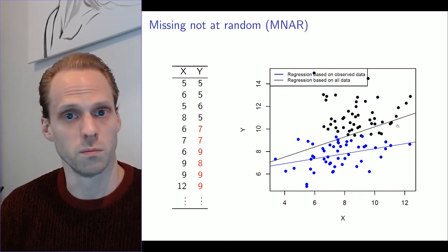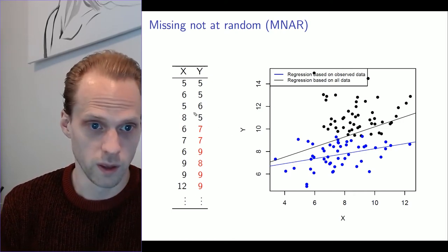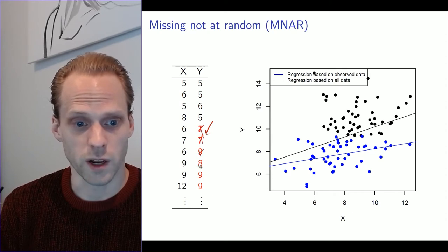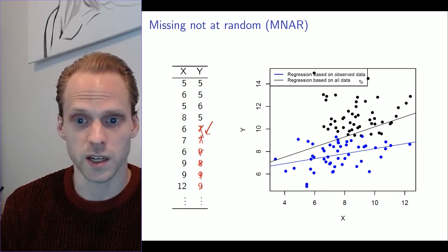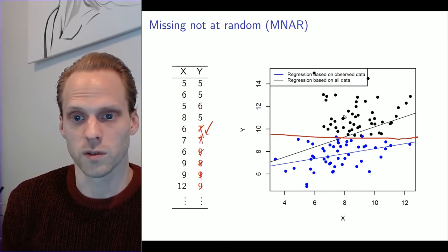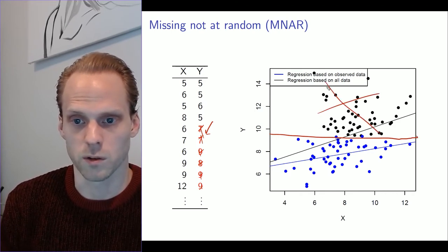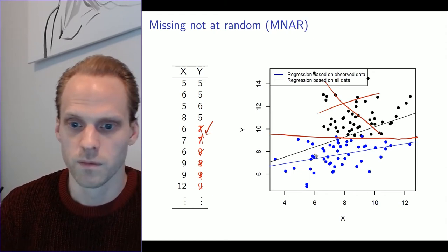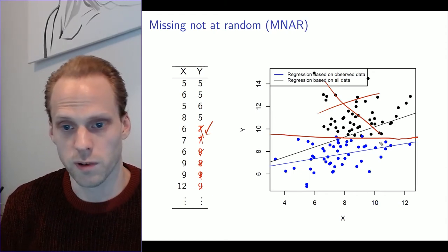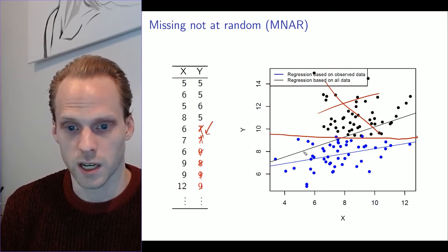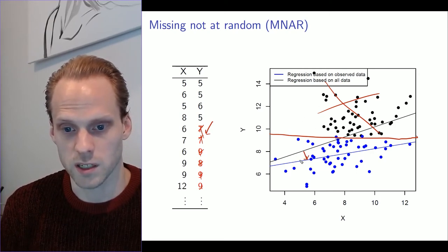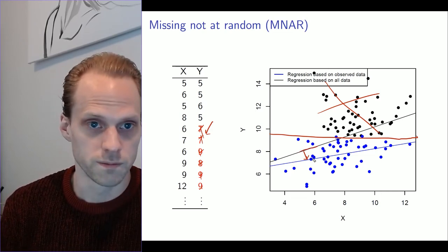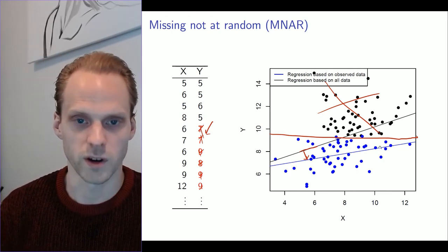But now if you go to the MNAR problem, where I make the data missing that would have otherwise had a high value, like a sensitive item, we are actually going to cut off a big part on the vertical area. We're going to cut off this whole area here. What we see is that we are sort of flattening our cloud. Now the estimated effect is much weaker than it would have been if you had all data. So we get a completely different result, and that would be a problem. It can be a very big problem.